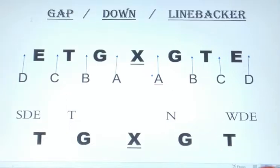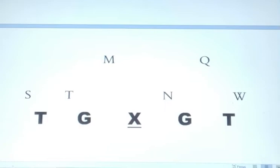The third thing in the sequence is linebacker. So the full sequence is: gap, down, linebacker. The first thing we check is the gap — what gap are you responsible for? The second thing is down — is there a down defensive lineman in your gap? The third thing is a linebacker.